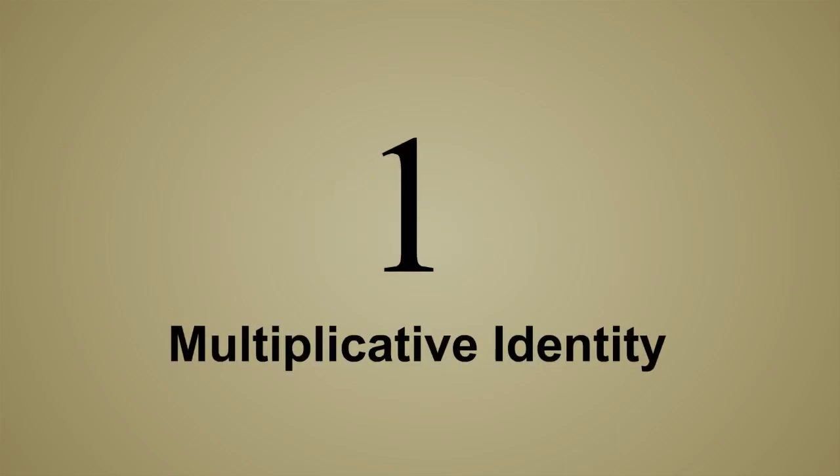One is also a number with a unique identity property. When any number is multiplied by one, its value is unchanged. So one is known as the multiplicative identity.